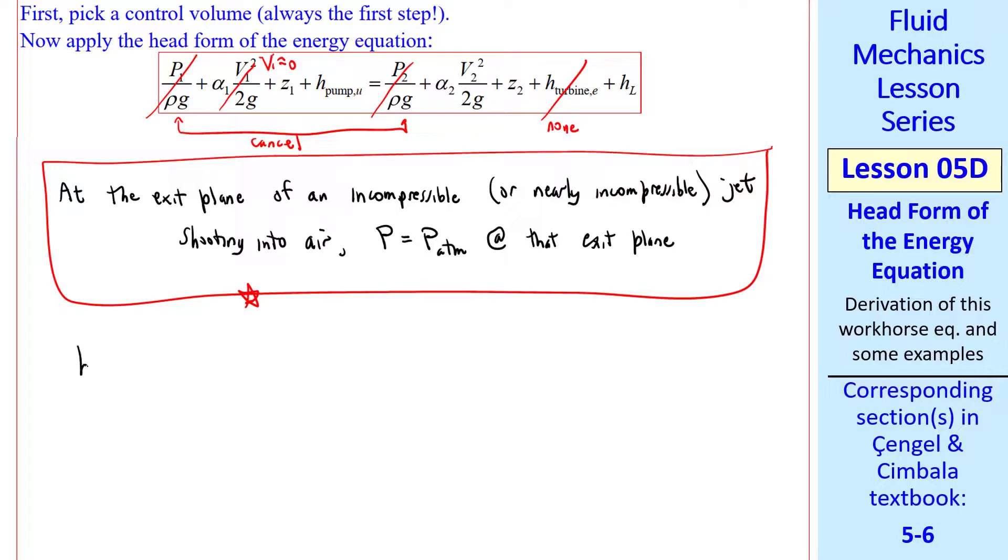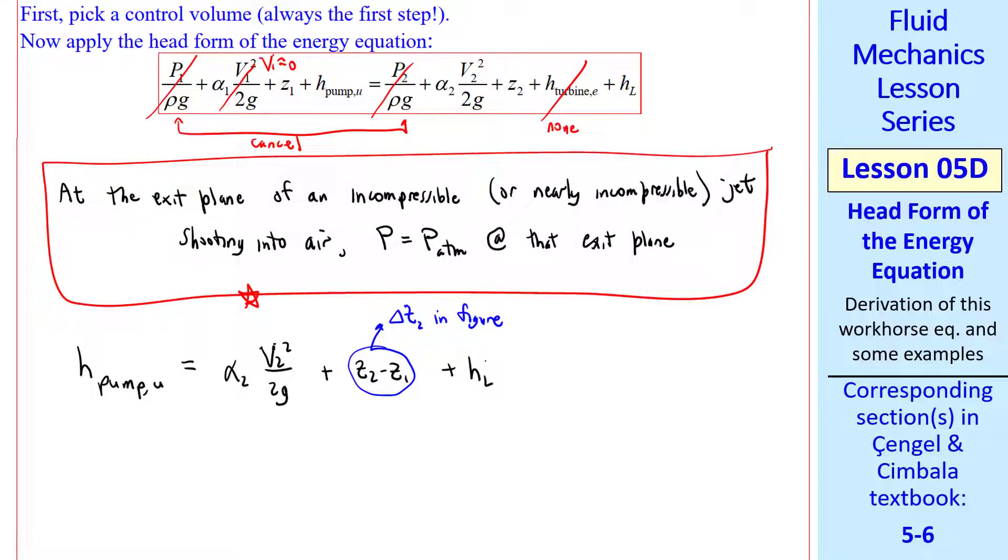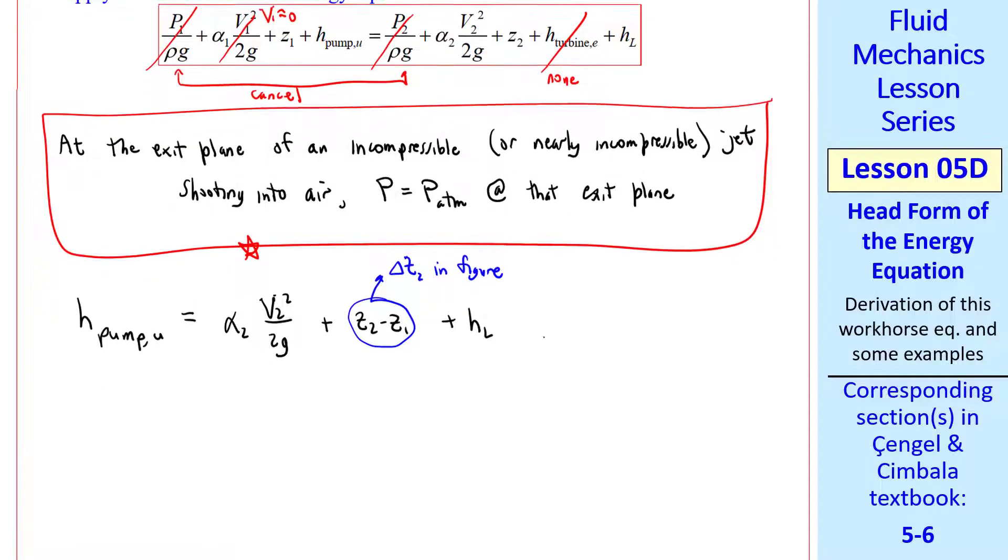Coming back to our equation, the two pressure terms cancel since they're both equal to atmospheric pressure. We've already said that V1 is approximately 0. So that term goes away. We have no turbine in this problem. And so we're left with these terms.